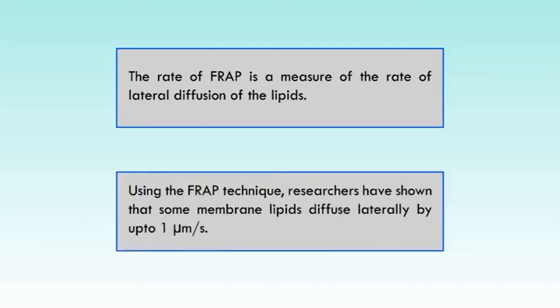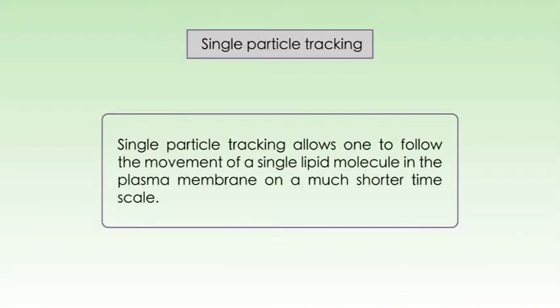Using the FRAP technique, researchers have shown that some membrane lipids diffuse laterally by up to one micrometer per second. Another technique, single particle tracking, allows one to follow the movement of a single lipid molecule in the plasma membrane on a much shorter time scale. Results from these studies confirm the rapid lateral diffusion within small, discrete regions of the cell surface and show that movement from one such region to a nearby region is inhibited — that is, lipids behave as though corralled by fences that they can occasionally jump.